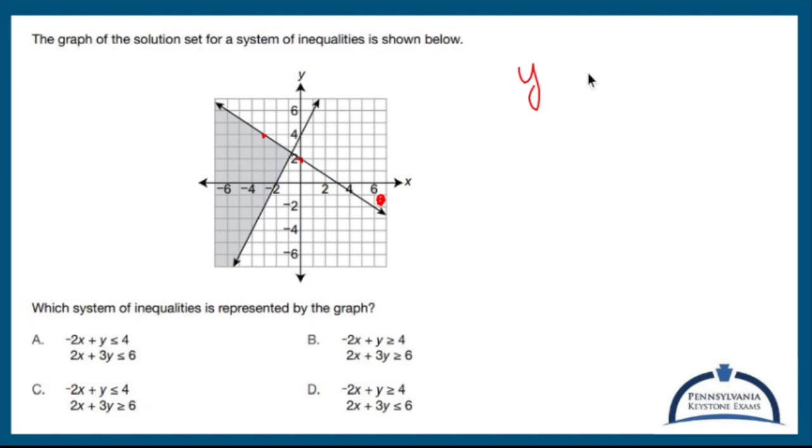3. So my slope is going to be negative 2 over 3x with a y-intercept of 2. Now, in order for the shading to be below the line, this has to be a less than or equal to. So there you have it.